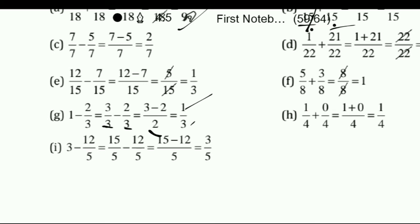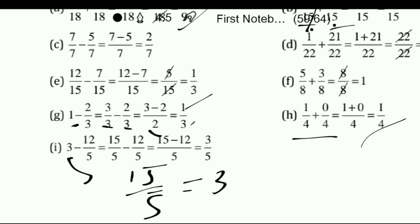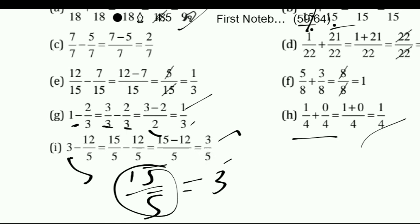Next question is 1 upon 4 plus 0 upon 4. So 1 plus 0 is 1 upon 4. Next: this 1 represents 15 upon 5 equals 3. So we write 15 upon 5 minus 12 upon 5, which gives 3 upon 5. That's it.